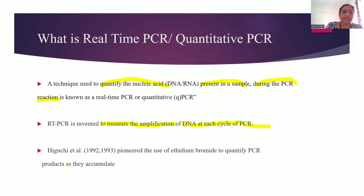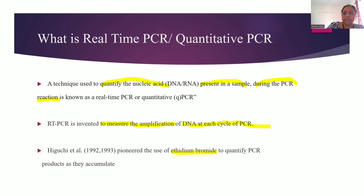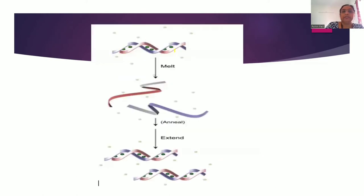For this quantification, Higuchi et al. in 1992-93 demonstrated it with ethidium bromide. That stain was then replaced by SYBR Green 1. Both ethidium bromide and SYBR Green 1 have the capability to intercalate into double-stranded DNA. When intercalated, the fluorescence of both increases by 100-fold.